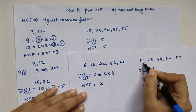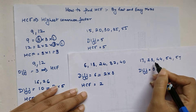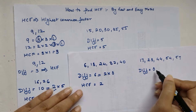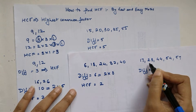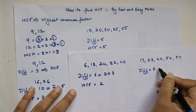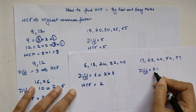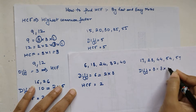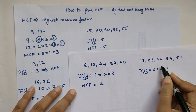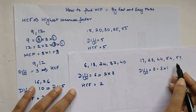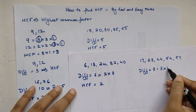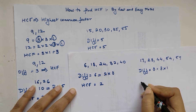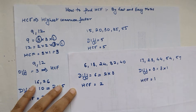We can see that 3 is not a factor of 17, nor of 23, nor of 44. There is no point checking further when it fails even a single number. We write 3 in terms of its prime factors: 3 × 1. Since 3 itself is not a factor of all the numbers, the only factor left is 1. So my HCF here is straightaway 1.